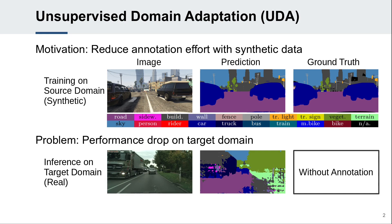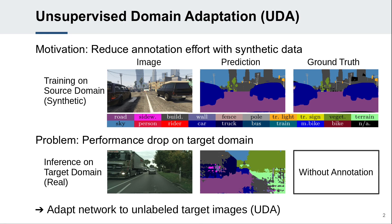However, a model trained on the source domain typically experiences a performance drop when applied to the target domain. The goal of unsupervised domain adaptation is to increase the performance on the target domain by using unlabeled target images.